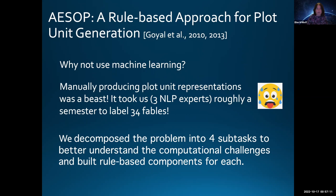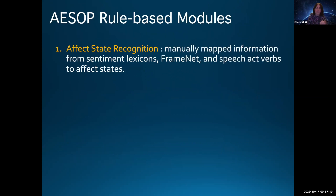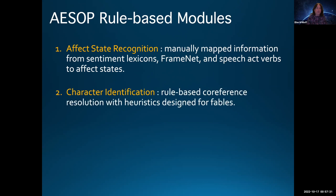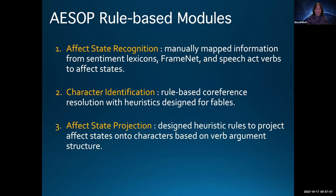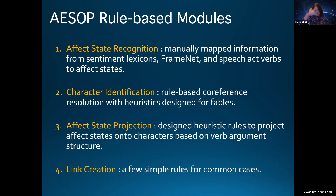The four tasks were: recognizing affective states (using existing tools like sentiment lexicons, FrameNet, and speech act verbs to recognize positive and negative states); character identification and co-reference resolution (off-the-shelf systems didn't work at all for Aesop's fables since they're mostly about animals referred to as he and she, but a simple rule-based method worked fine); affect state projection rules to map affective terms onto characters; and finally, some ad-hoc link creation components. These were rule-based modules cobbled together to create plot units automatically.